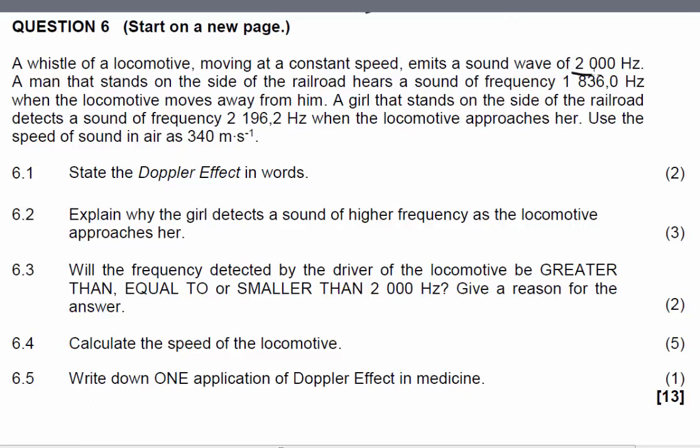A man that stands on the side of the railroad hears a sound of frequency 1836 Hz when the locomotive moves away from him. A girl that stands on the side of the railroad detects a sound of frequency 2196.2 Hz when the locomotive approaches her. Use the speed of sound in air as 340 m per second.